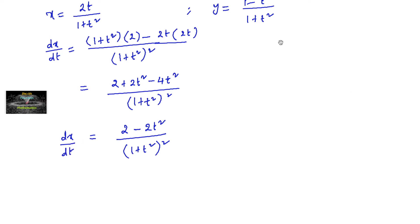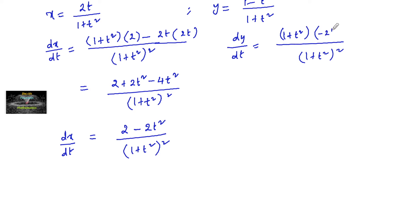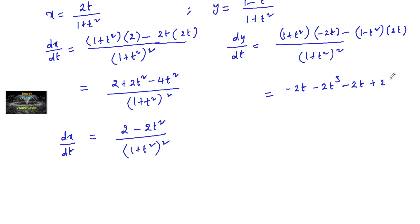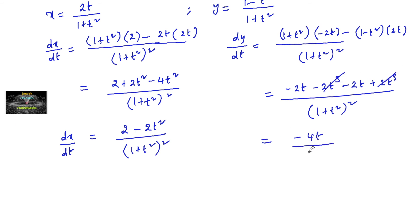For y, similarly we differentiate with respect to t. dy by dt is equal to, denominator (1 plus t square) whole square: 1 plus t square into differentiation of 1 minus t square is minus 2t, minus 1 minus t square into differentiation of 1 plus t square is 2t. Which equals minus 2t minus 2t cube minus 2t plus 2t cube divided by (1 plus t square) whole square. The minus 2t cube and plus 2t cube cancel, giving minus 4t upon (1 plus t square) whole square. This is dy by dt.